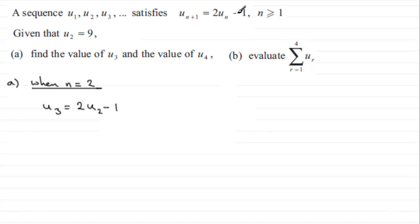And we know what the second term in the sequence is, we were told that it was 9. So we got 2 times 9 minus 1, and if you work that out you've got 18 minus 1, which is 17. So our third term in the sequence is 17.